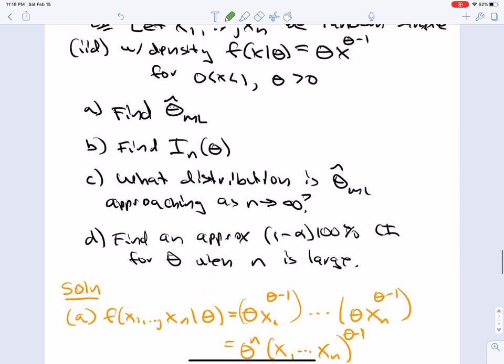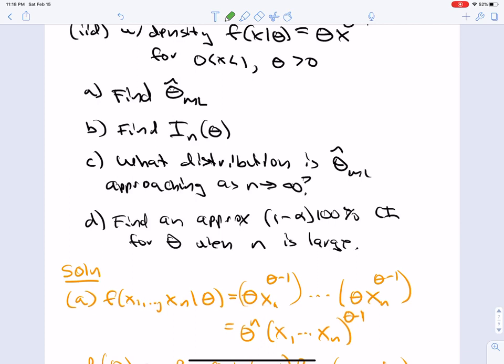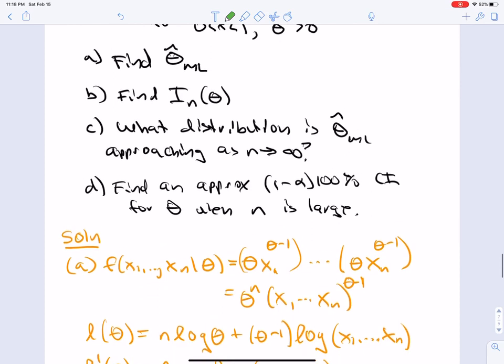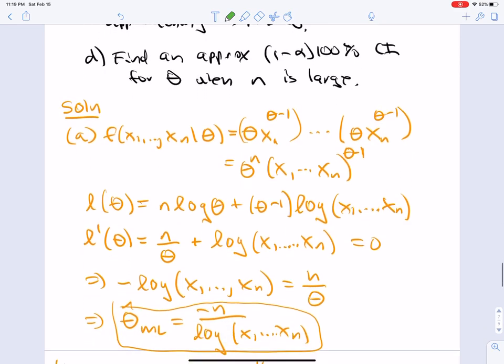Okay, we're back. So our joint density we can factor because of the independence, and we get theta to the N, X1 to Xn to the theta minus one. We take the logarithm and use our log laws. We get N log theta plus theta minus one log X1 to Xn. And take the first derivative with respect to theta. So we get N over theta plus log X1 to Xn. We set that equal to zero to compute the ML estimator, which we easily see as minus N over log X1 to Xn.